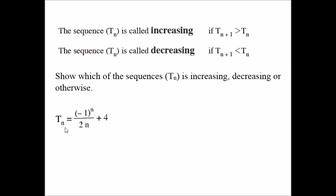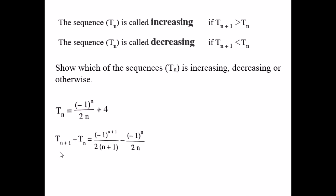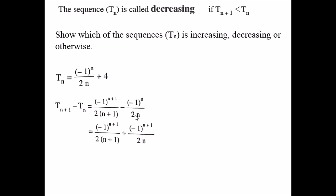Another example: T(n) = (-1)^n / (2n+4). Check whether the sequence is increasing, decreasing, or otherwise. Compute T(n+1) - T(n). T(n+1) = (-1)^(n+1) / (2(n+1)+4) = (-1)^(n+1) / (2n+6). Note that (-1)^(n+1) = -(-1)^n. After substitution, the 4 cancels in both terms, and we simplify using (-1)^n as a common factor.